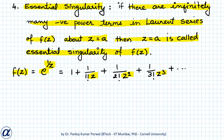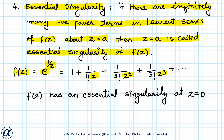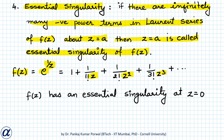Therefore, f(z) equals e to the power 1 upon z has an essential singularity at z equals zero. This singularity is called essential because it cannot be removed by redefining the function at z equals zero, as was the case for removable singularity.